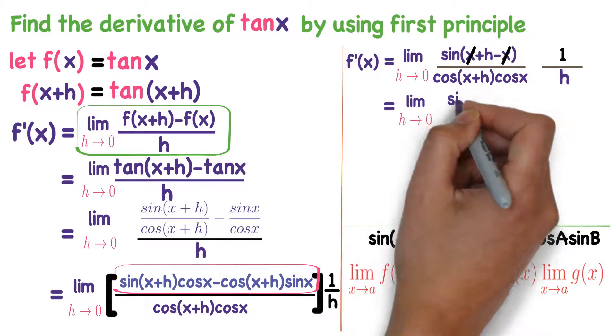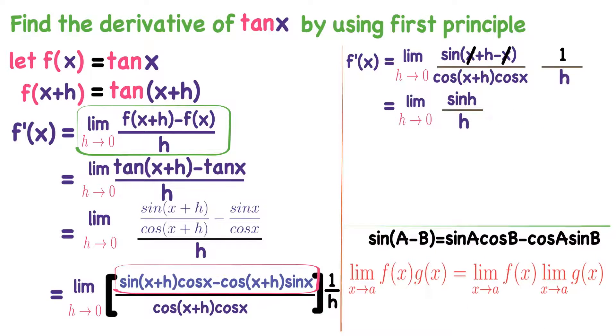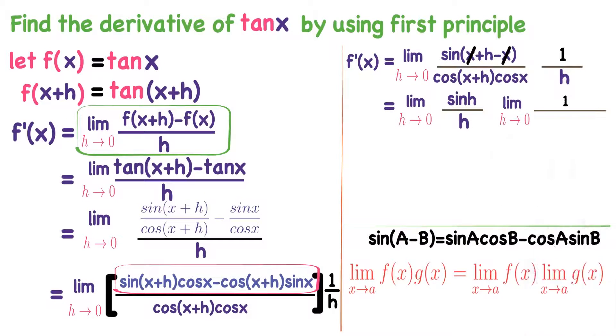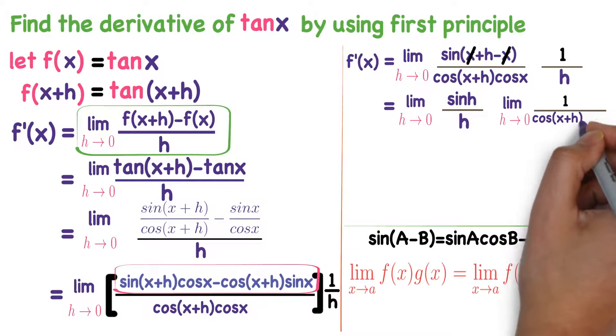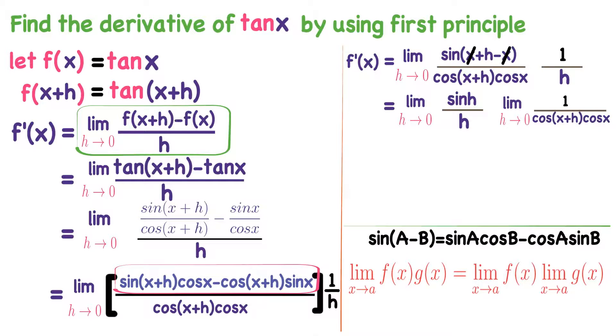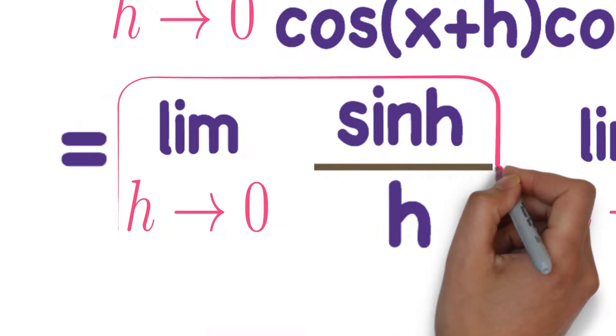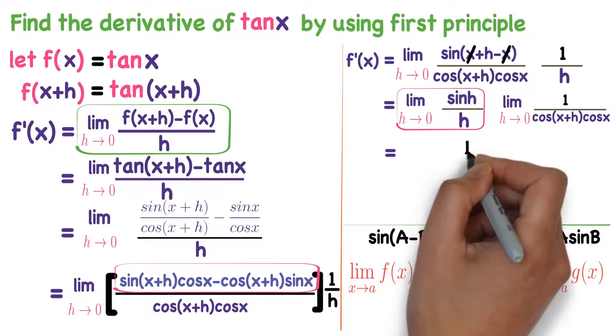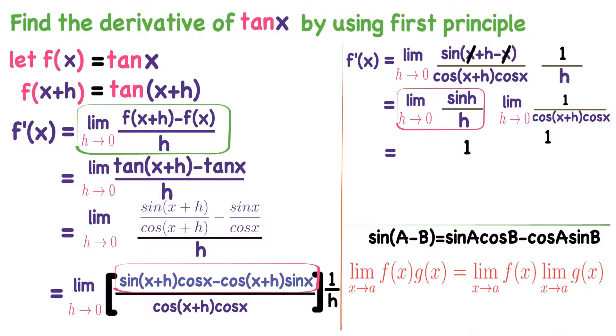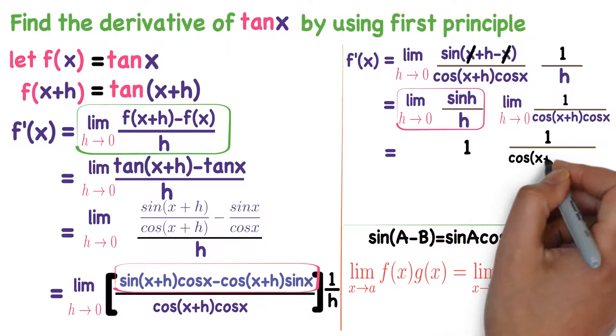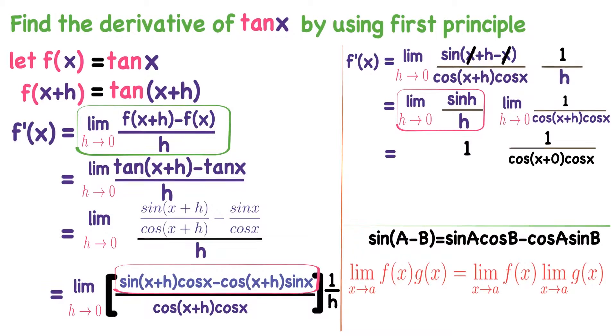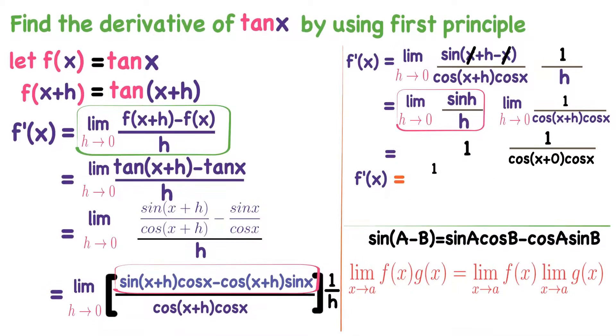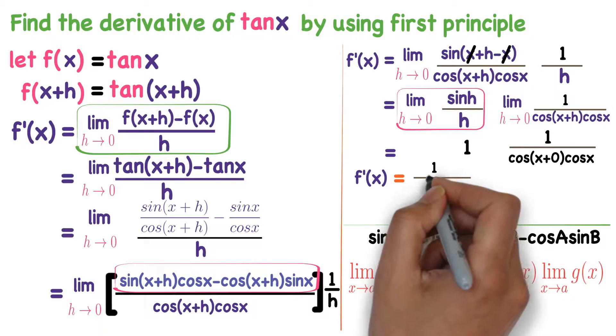Limit h tends to 0, sin h divided by h into limit h tends to 0, 1 divided by cos(x+h) into cos x. Now apply the limit to this one. We know the formula for this. In limits chapter we learned that this formula is 1. If we apply limit here, wherever h is there, you write 0 over there. So you will get cos x into cos x. So what is f'(x)? f'(x) is 1 divided by cos square x.